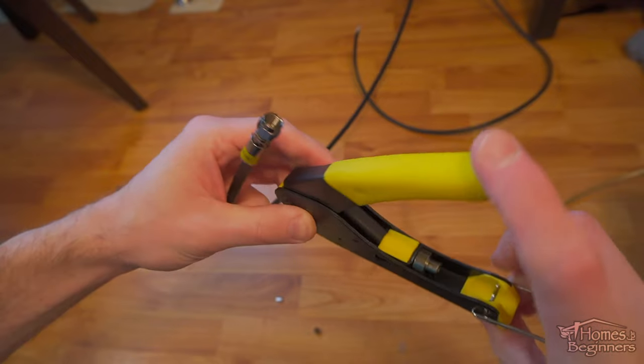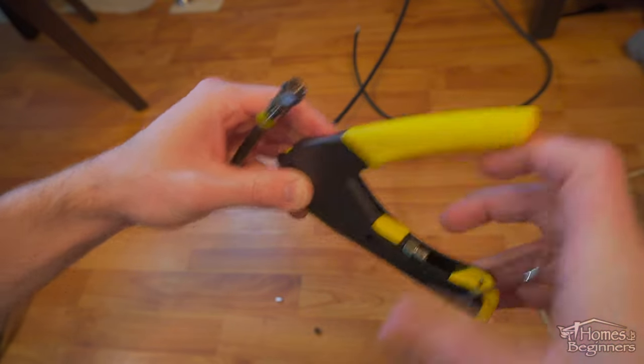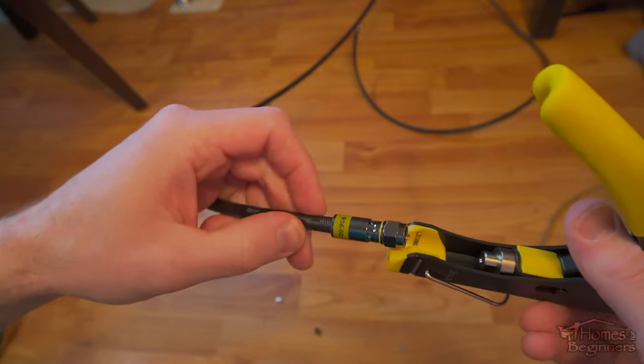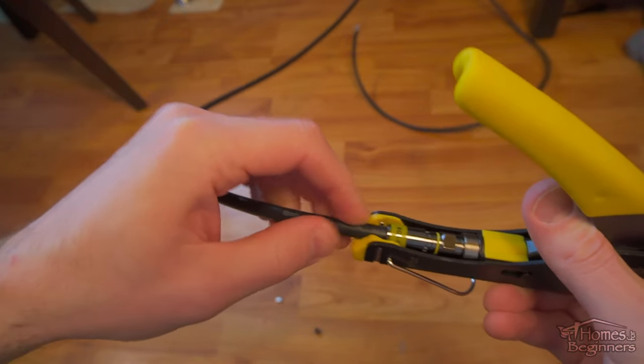Next is using the compression tool. The cable is inserted into the right side. Then the handle is pushed down and as you can see the plunger pushes out against the body where the connector locks into place.